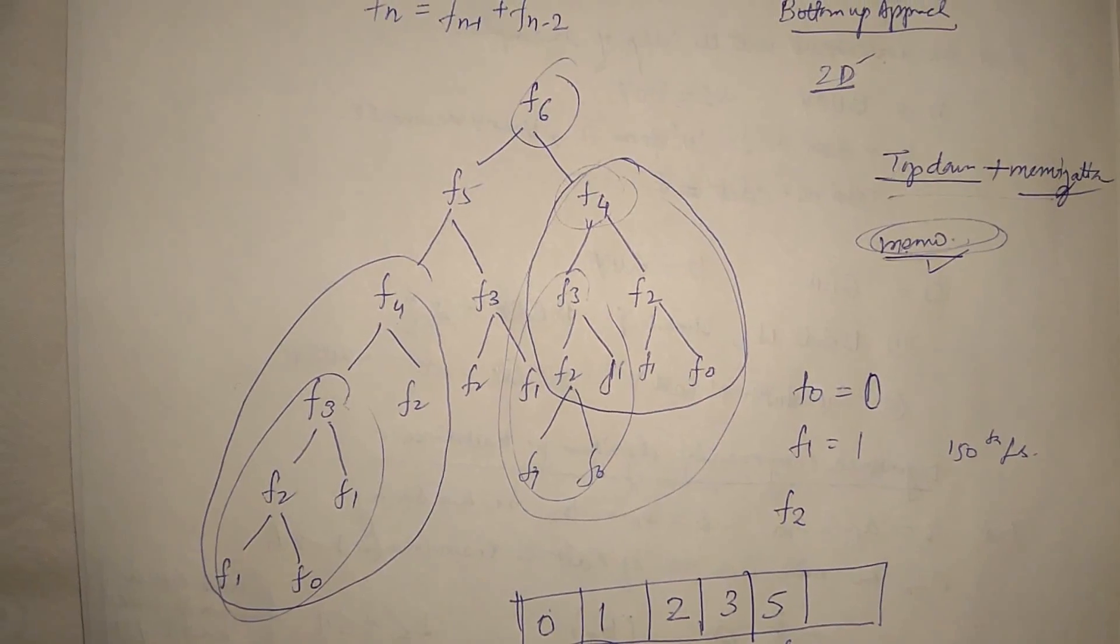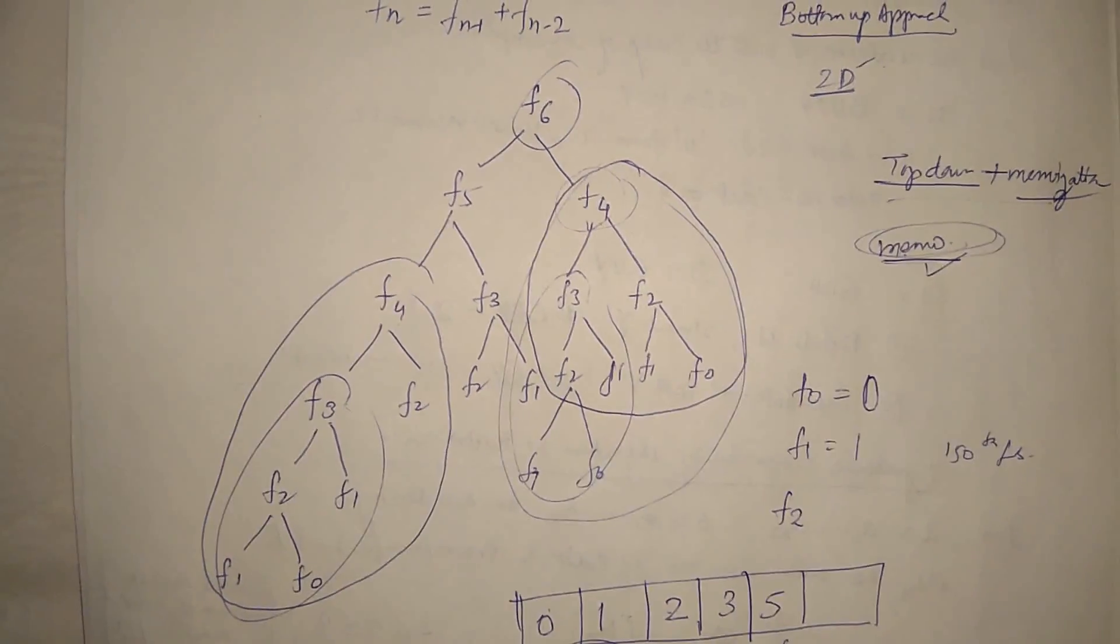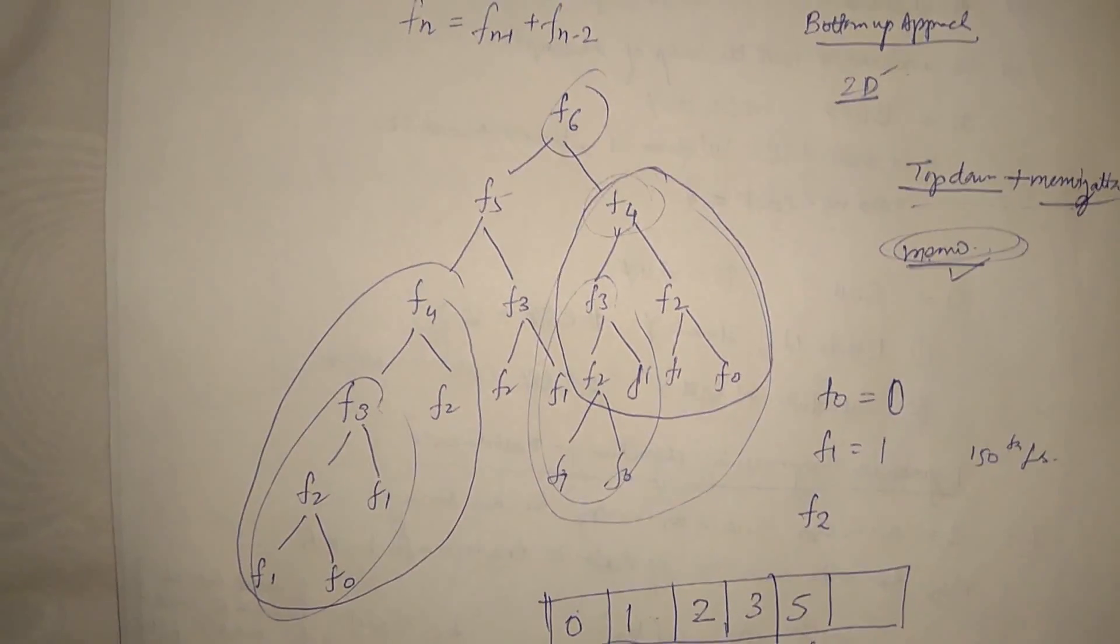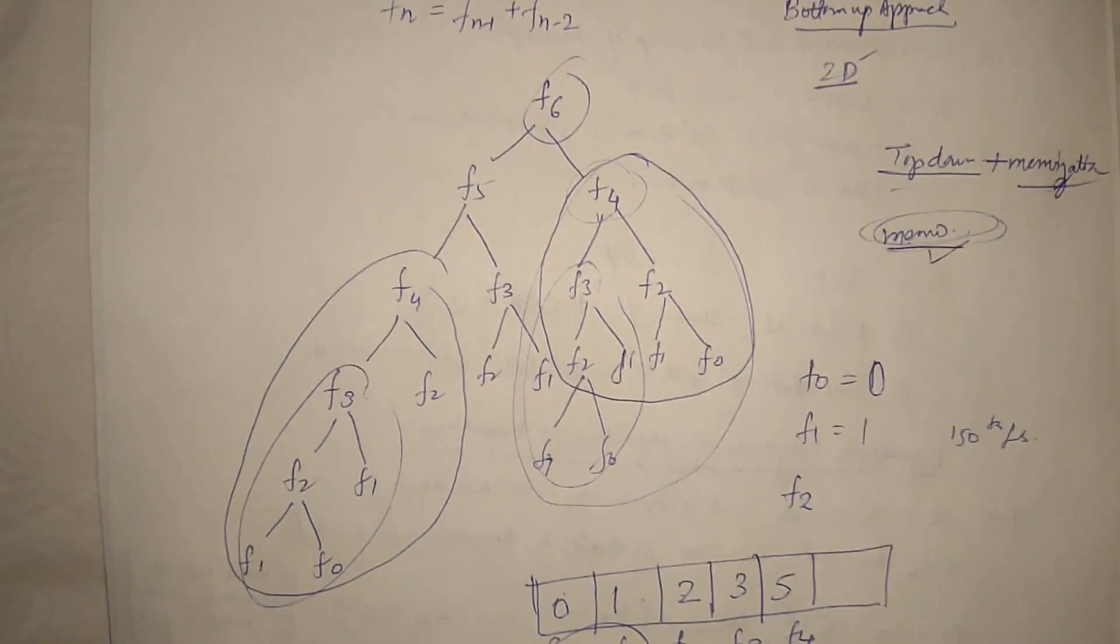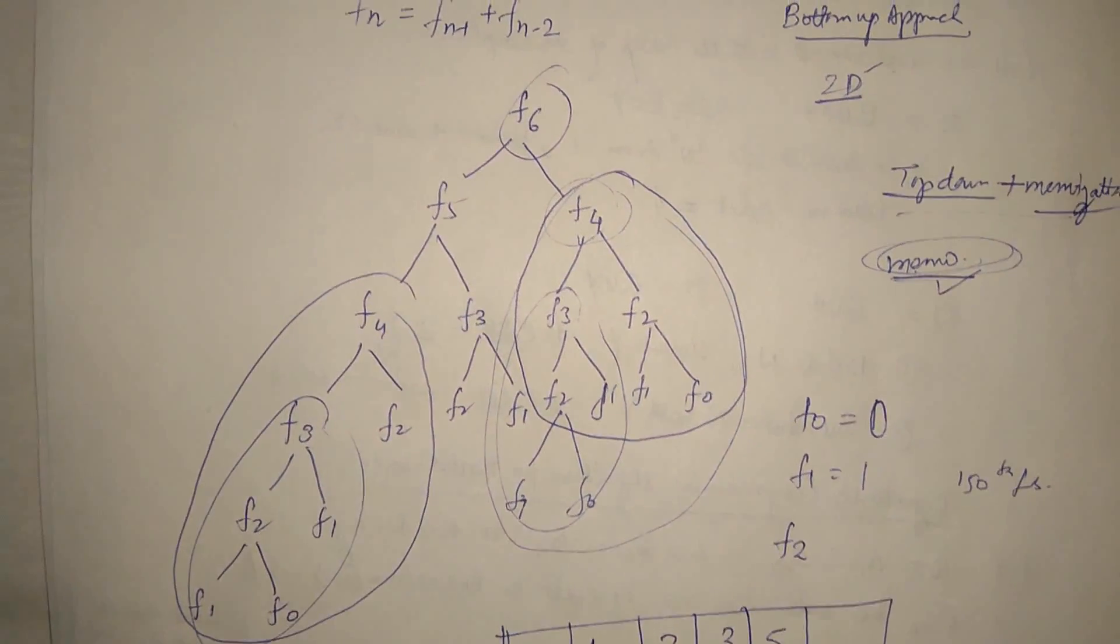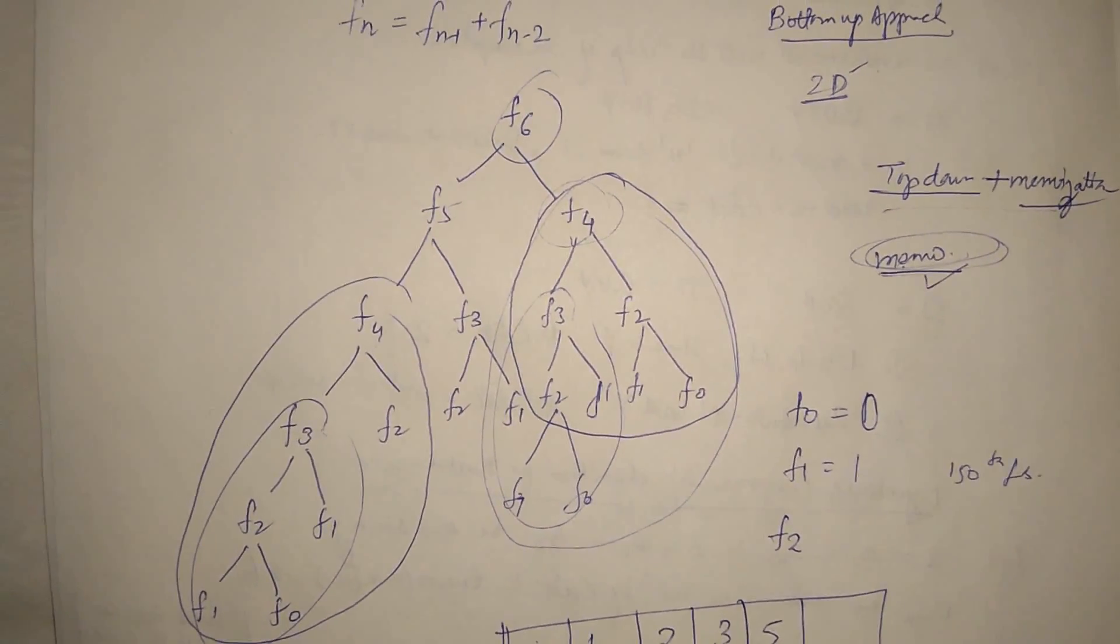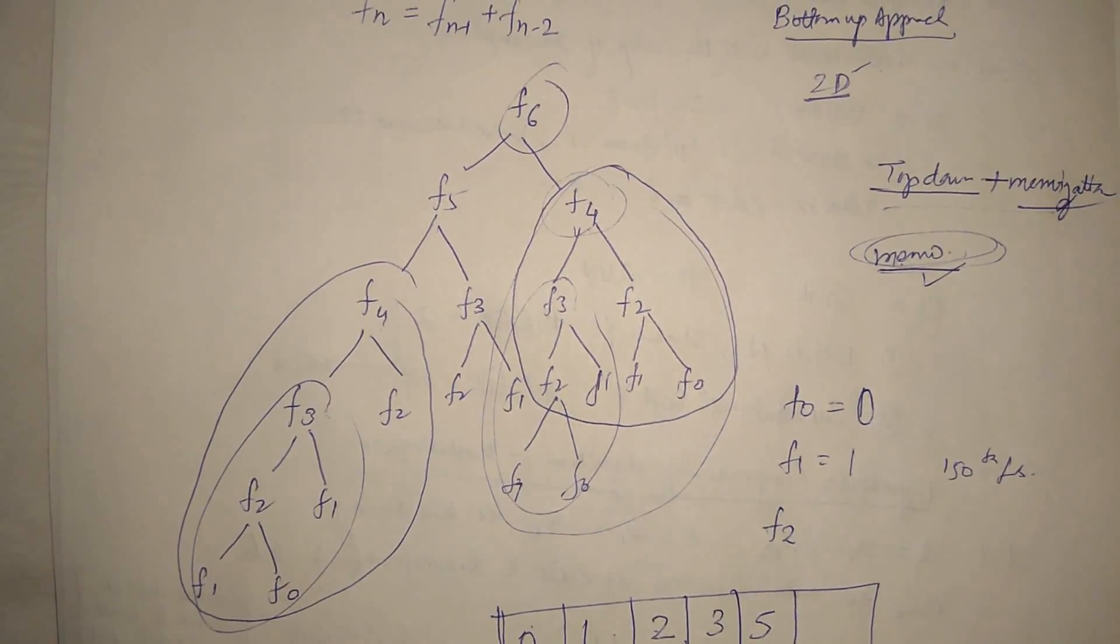In my channel, you can find more problems solved using this dynamic programming approach. The famous dynamic programming problems are like 0-1 knapsack problem, matrix chain multiplication problem, longest common subsequence, which you can also find in Cormen book CLRS. Hope you enjoyed it. Thank you. Have a nice day.